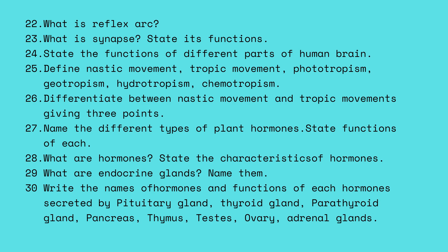Define nasty movement and tropic movement. Examples include phototropism, geotropism, hydrotropism, and chemotropism. Differentiate between nasty movement and tropic movement giving three points. Name the different types of plant hormones and state the function of each one.